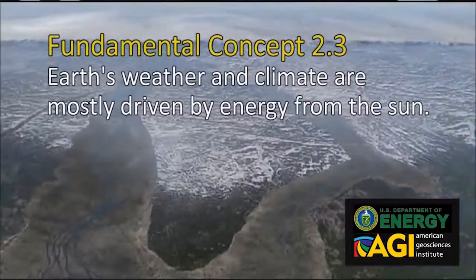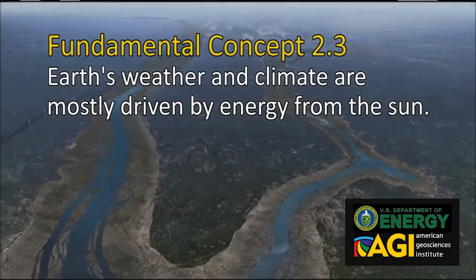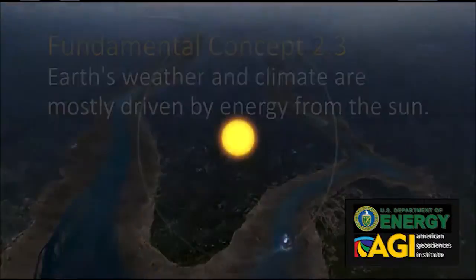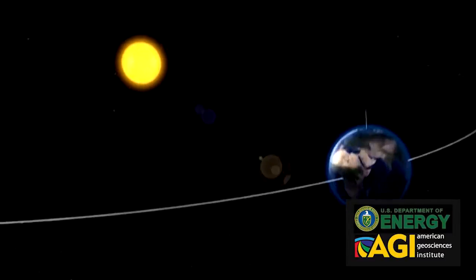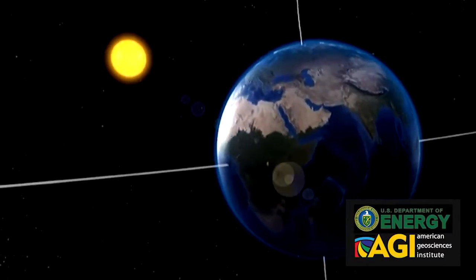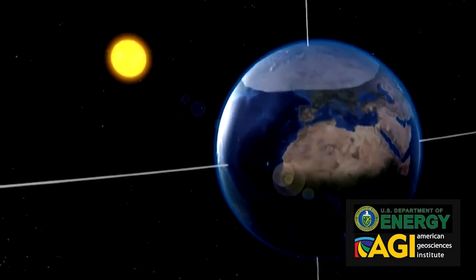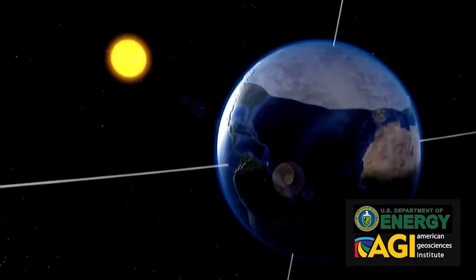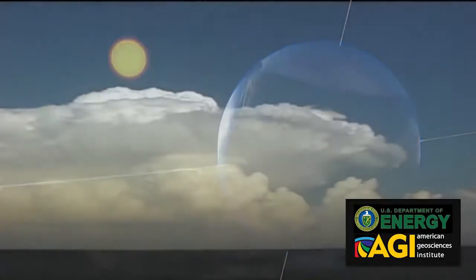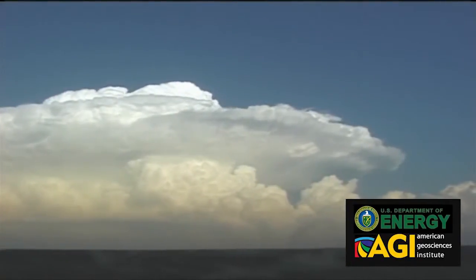Earth's weather and climate are mostly driven by energy from the Sun. For example, unequal warming of Earth's surface and atmosphere by the Sun drives convection within the atmosphere, producing winds and influencing ocean currents.